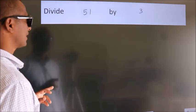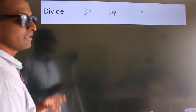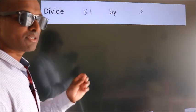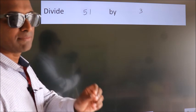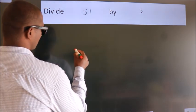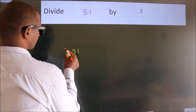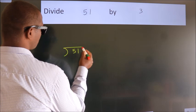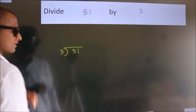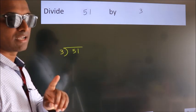Divide 51 by 3. To do this division, we should frame it in this way: 51 here, 3 here. This is your step 1.